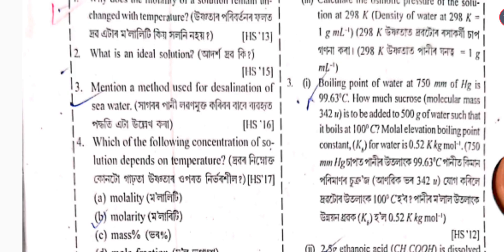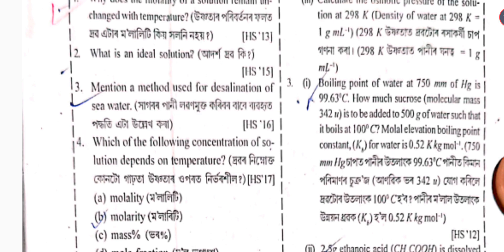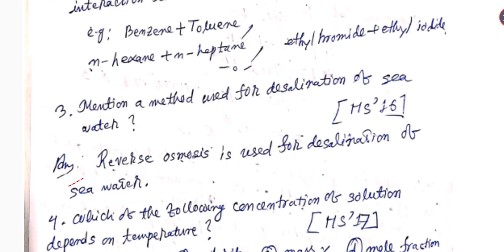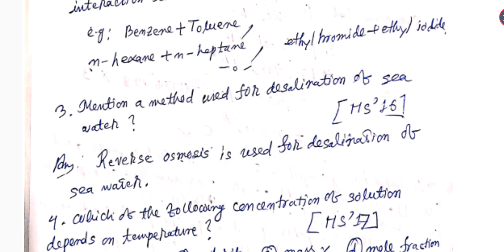Question number 3: What is the method used for desalination of sea water? Reverse osmosis is used for desalination of sea water.